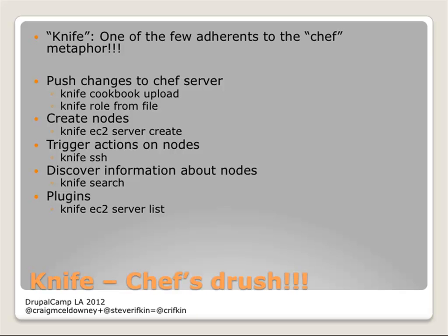Knife — you can think of knife as a drush. It's basically a command line tool for interacting with Chef server. Chef does have a web UI, which is powerful, but it's a lot faster to deal with knife. Some of the things you can do with knife are managing cookbooks, managing recipes, and basically pushing code to the Chef server. If you've got a Chef server keeping your central list of cookbooks, anytime you spin up a new box that Chef server is going to serve as the authoritative source for any configuration stuff.